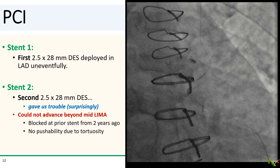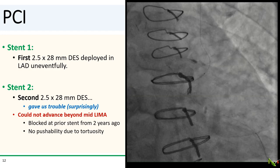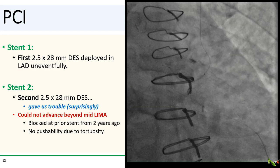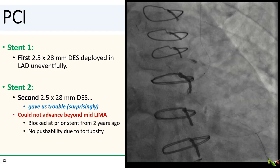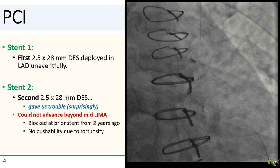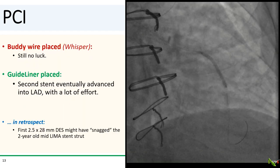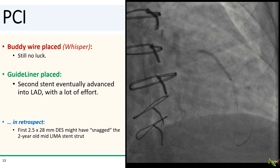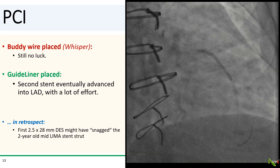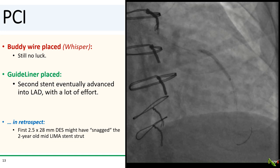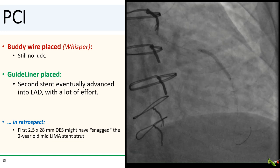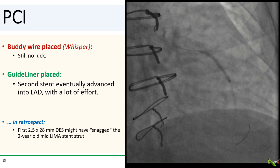We next tried to pass a second 2.5 by 28 mm DES, and to our surprise, this gave us trouble. Even though the first stent went by without any problems, the second stent got stuck in the mid-LIMA and seemed to be blocked by the prior stent from two years ago, with very limited pushability due to the tortuosity of the LIMA. We tried a buddy wire — still no luck. With a lot of effort, a deep-throated guide liner and some elbow grease, the second stent eventually passed and was deployed in the LAD. In retrospect, it is possible that the first stent snagged a strut from that two-year-old LIMA stent and blocked passage of the second stent. We thought we were close to being done — just a little post-dilation and we'd be finished.